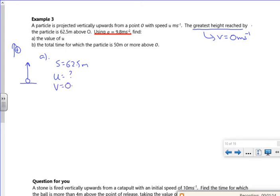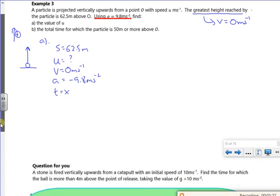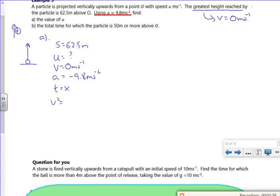v, because I'm at the top, is zero. My acceleration, because it's acting in the opposite direction, is minus 9.8. t, not fussed about. So I'm going to use v squared equals u squared plus 2as.